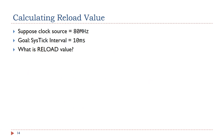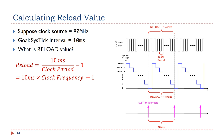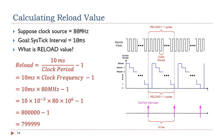Suppose the clock source that drives the timer counter has a frequency of 80 MHz. We want to generate a SysTick interrupt every 10 milliseconds. The reload value is calculated as follows: reload value equals 10 milliseconds divided by the clock period, minus 1. This is equivalent to 10 milliseconds multiplied by the clock frequency, minus 1. The final result is 799,999.